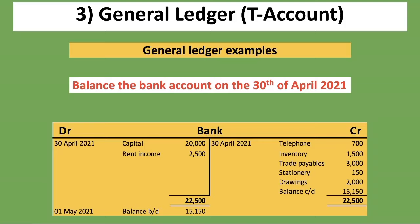If anything is unclear, scroll back and listen again. There's also a link in the description below for another detailed lesson specifically on the general ledger account. This was part three of our accounting for beginners series. Part four, found in the link in the description, covers accruals and how you account for them in your books. See you in the next one.